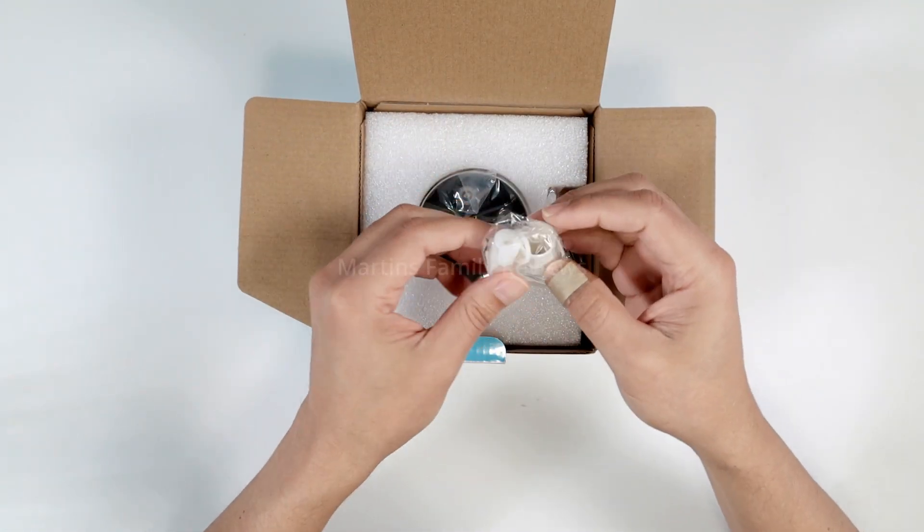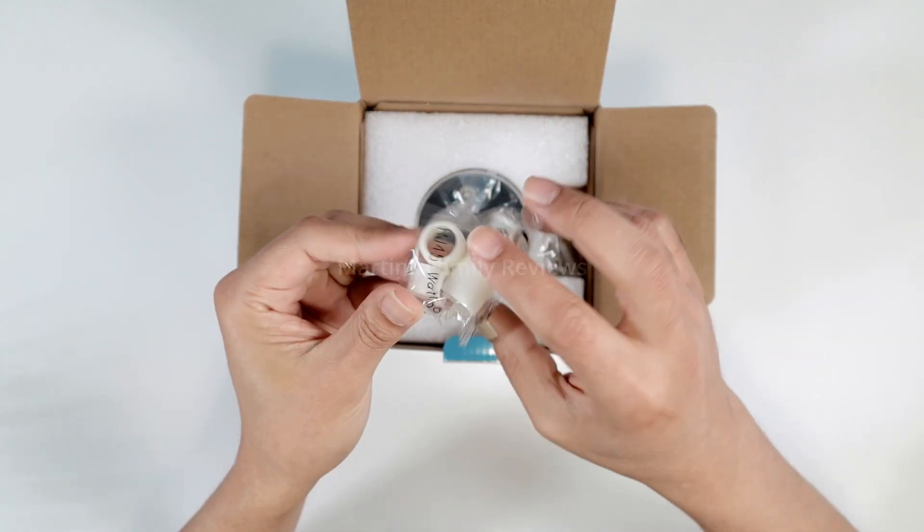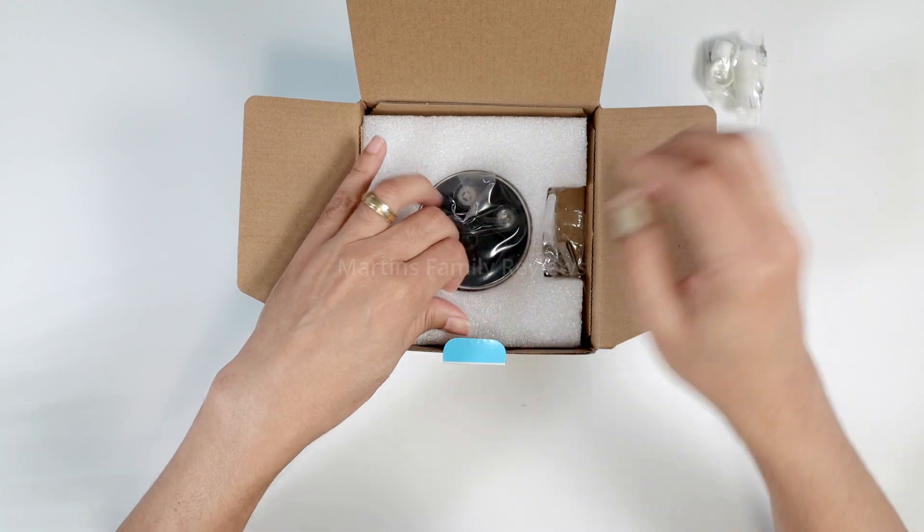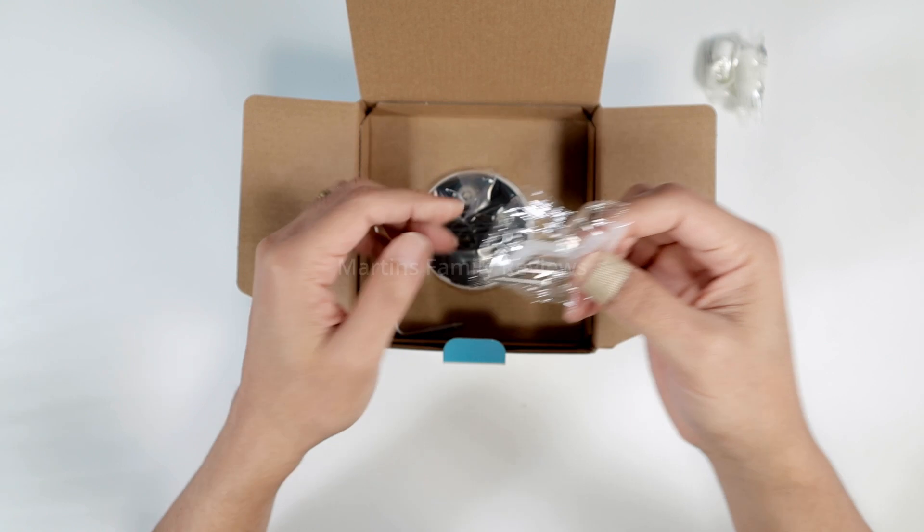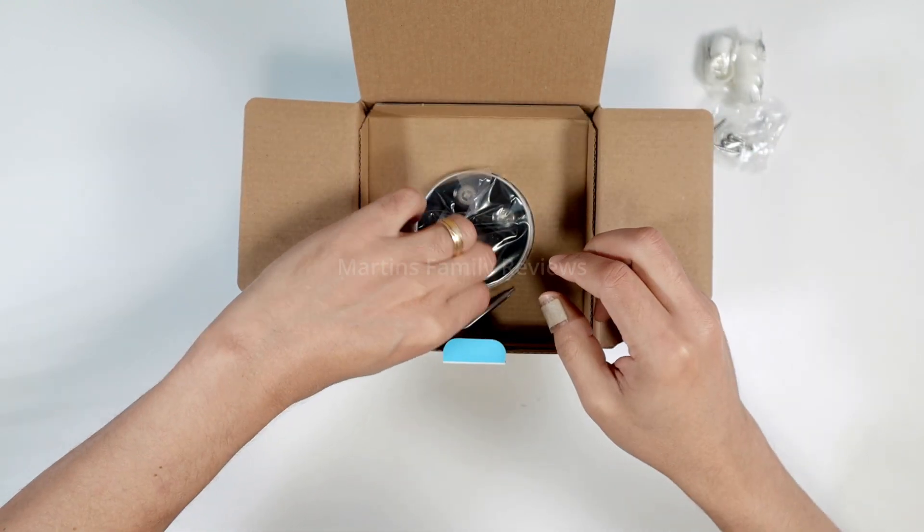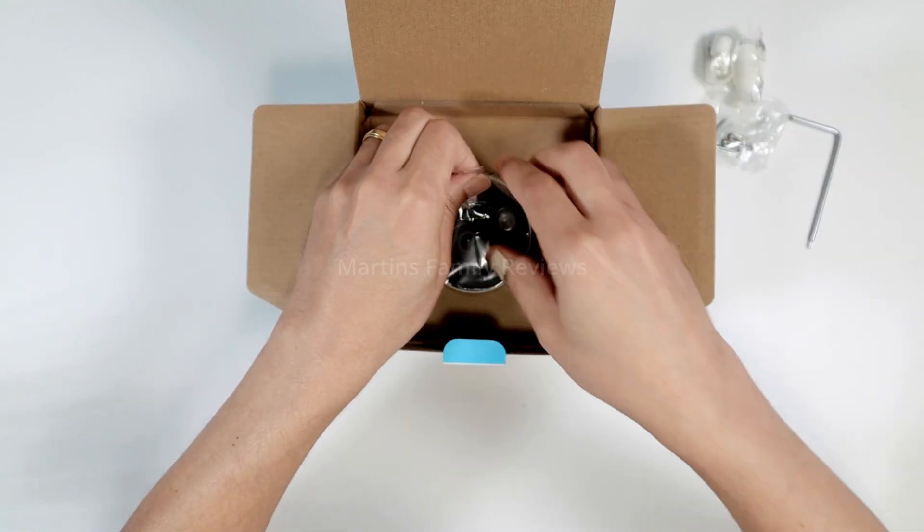Let's take a look at the camera itself. So it comes here with some protection, so you can protect your cable for outdoor installation. And here we go, some anchors and some screws so you can install your camera. And also here you have the tool to open the camera.